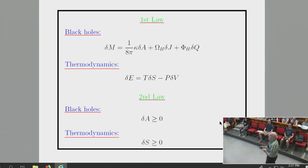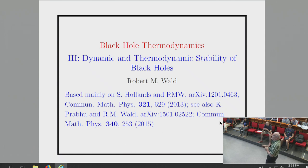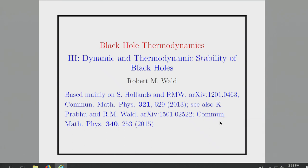Moving on, within classical general relativity I want to extend this analogy considerably further, going beyond first-law stuff to show that thermodynamic stability is in fact equivalent to dynamical stability of a black hole in general relativity. In this talk I'll restrict to general relativity rather than an arbitrary theory of gravity, but I'll allow the dimension to be arbitrary, which gives more examples than just the Kerr black hole.